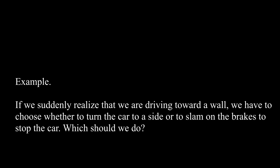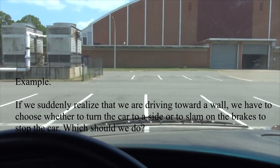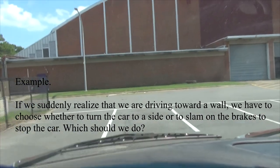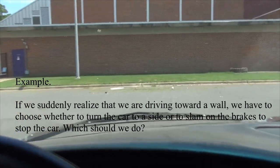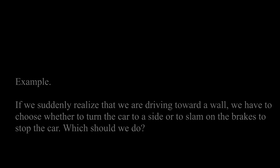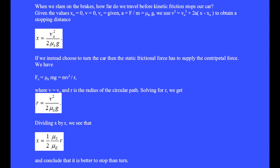If we suddenly realize we are driving toward a wall, we have to choose whether to turn the car to the side or slam on the brakes to stop. When we slam on the brakes, how far do we travel before kinetic friction stops the car? Given x₀ equals 0, final velocity of 0, and an initial velocity, the acceleration is the force over the mass equals μₖ times g. We use this equation to obtain x equals V₀² divided by 2μₖg.